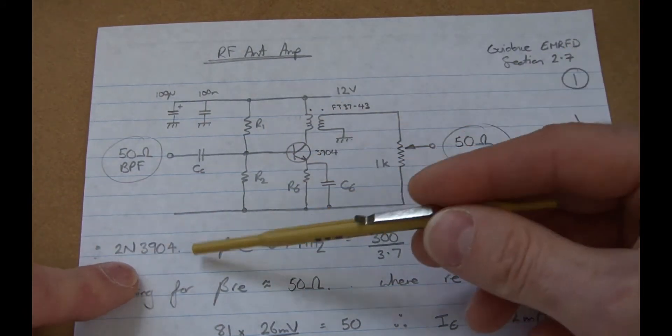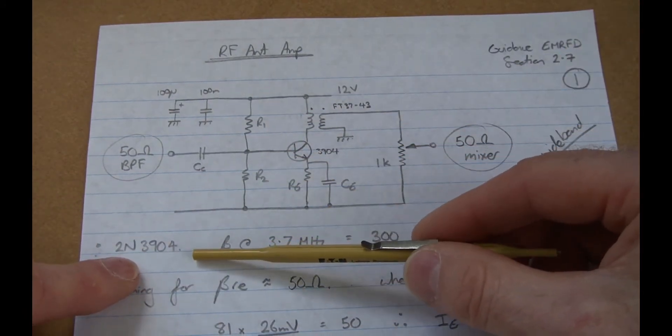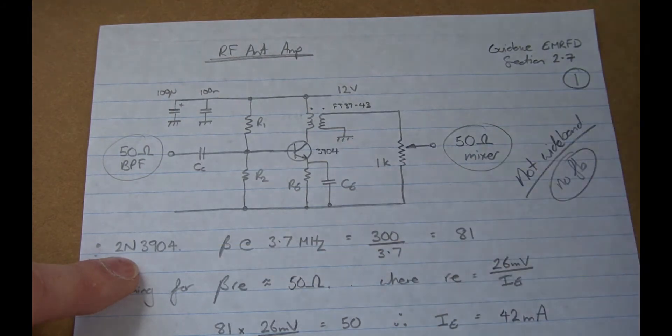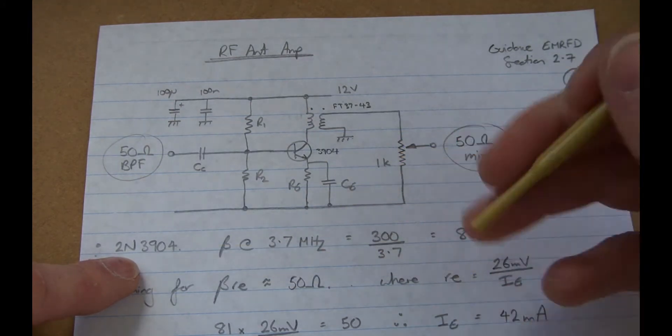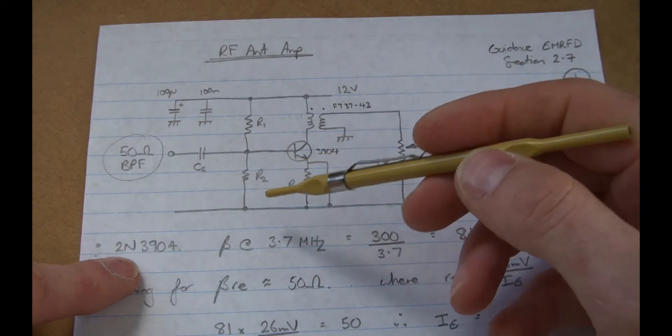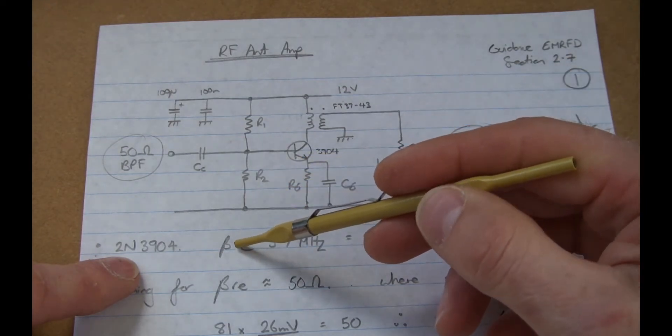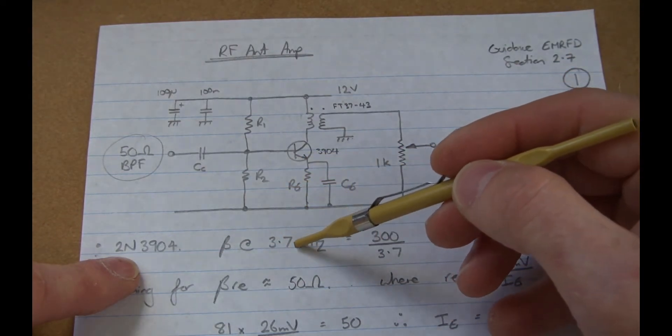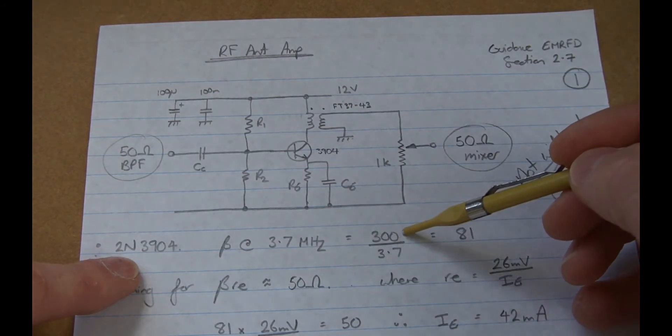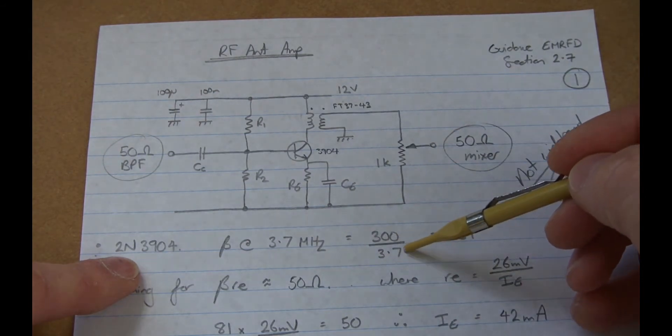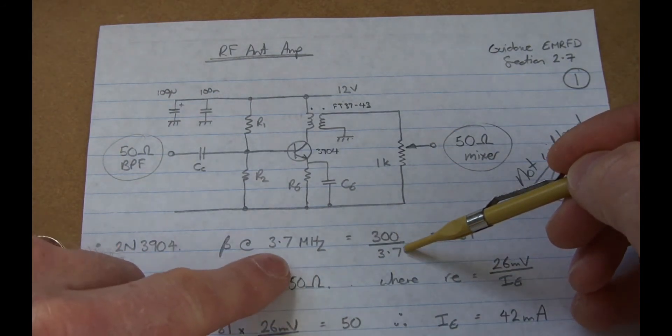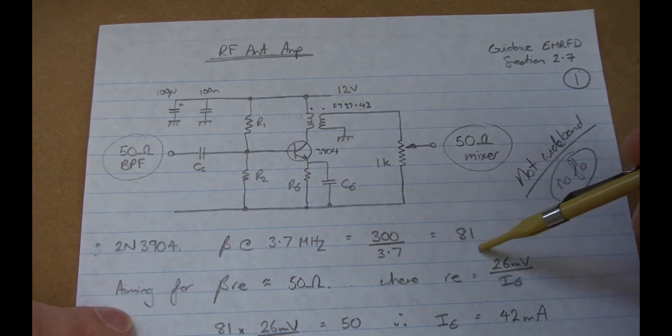So in terms of design assumptions, I'll be using a 2N3904, which we're going to be doing predominantly for this build just to keep things nice and simple. To work out the beta at my notional 3.7 MHz, it'll be 300 from the spec sheet divided by 3.7, so that's the frequency in MHz, gives me a beta of 81.